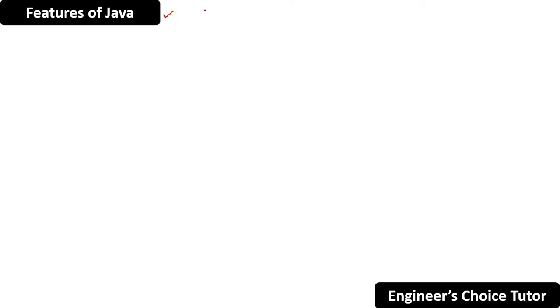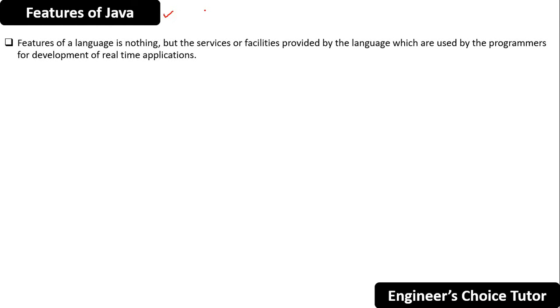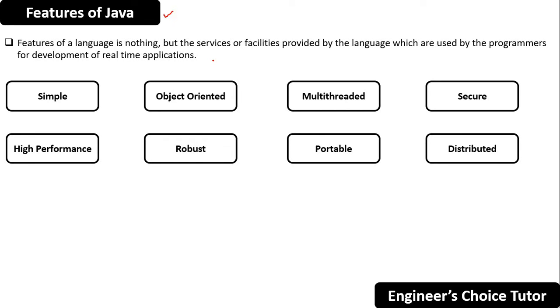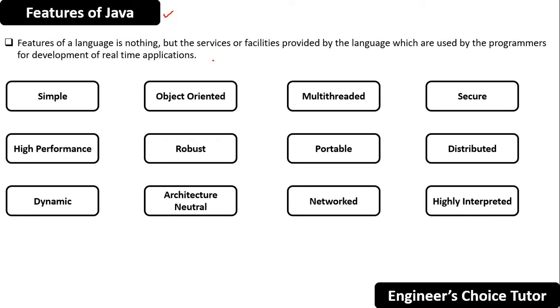In today's lecture we will discuss the features of Java programming language. Features of a language are the services or facilities provided by the language which are used by programmers for development of real-time applications. Java can be described by the following buzzwords: simple, object oriented, multi-threaded, secure, high performance, robust, portable, distributed, dynamic, architecture neutral, networked, and highly interpreted.